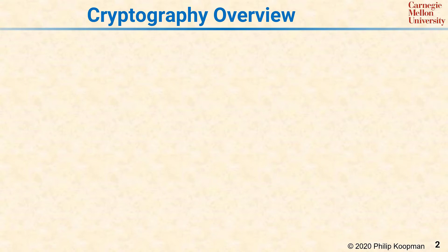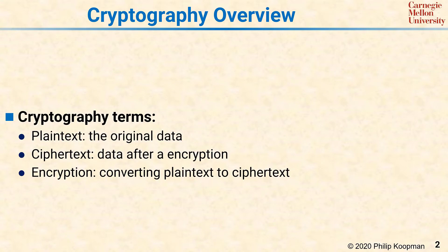At the very highest level, the general idea of cryptography is to keep a secret by scrambling the information. More specifically, there is some original piece of data called the plain text that is then run through an encryption algorithm. Encryption converts the plain text into ciphertext, where ciphertext is the data after the encryption occurs.